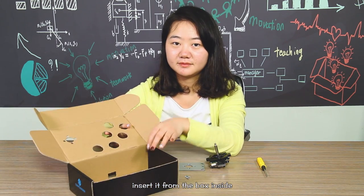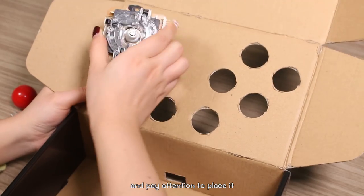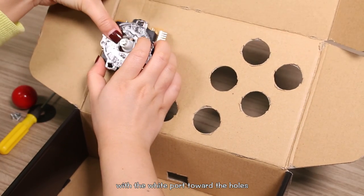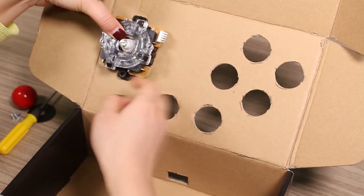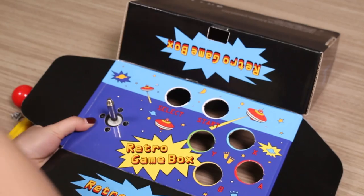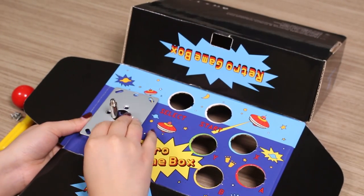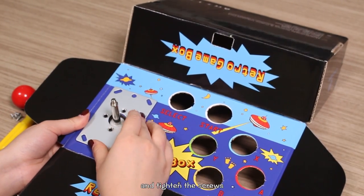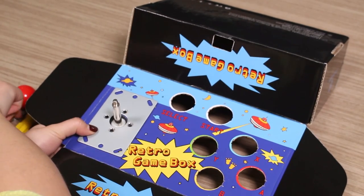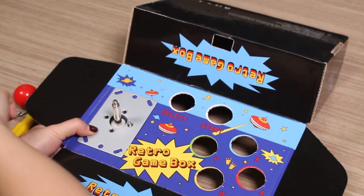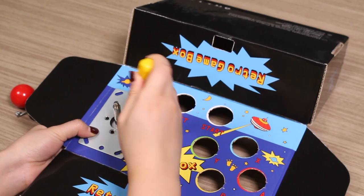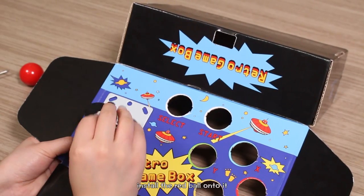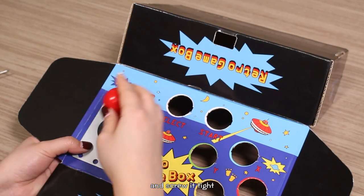Insert it from the box inside, and pay attention to place it with the white port toward the holes. Turn it over. Put the iron plate back. Line the holes and tighten the screws. Install the red ball onto it and screw it tight.